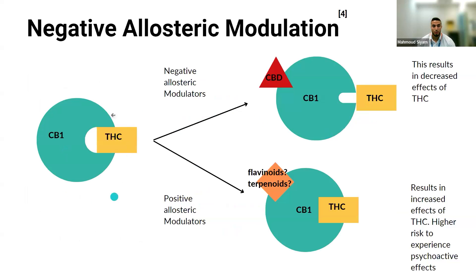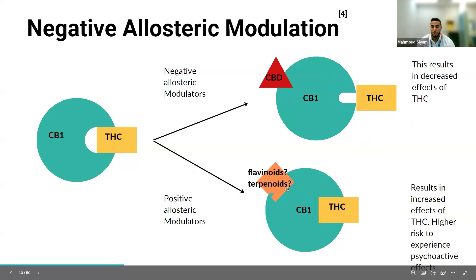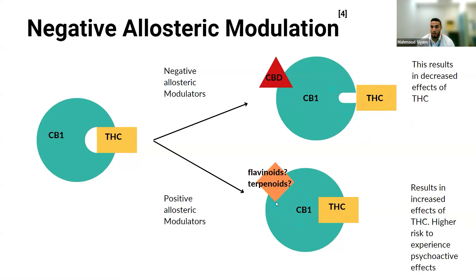With negative allosteric modulation, THC doesn't properly bind to the active site of the CB1 receptor when CBD is present. This results in decreased effects of THC clinically, so incorporating CBD generally helps mitigate adverse THC effects. On the other hand, positive allosteric modulators can enhance the effects of THC. It is hypothesized that flavonoids or terpenoids — the compounds that give the plant its specific aroma or taste — can actually increase the effects of THC.